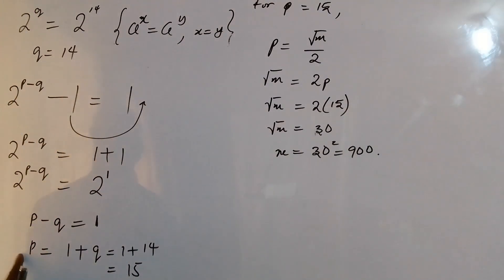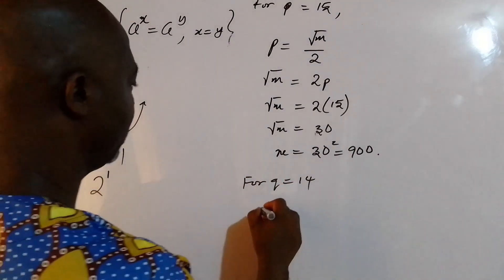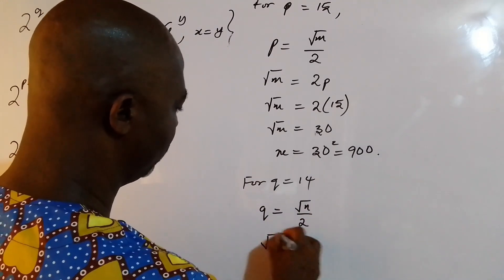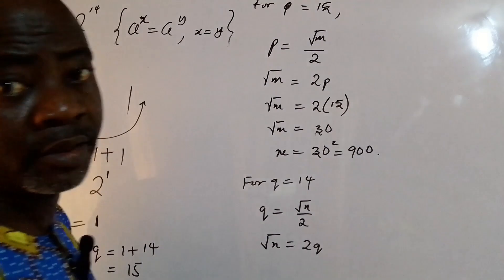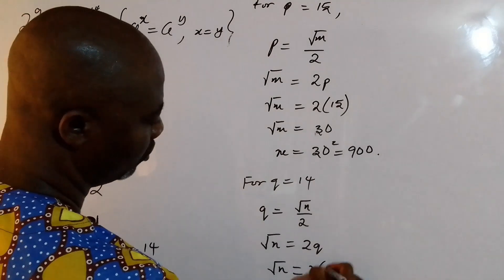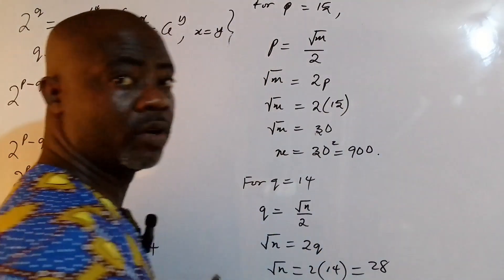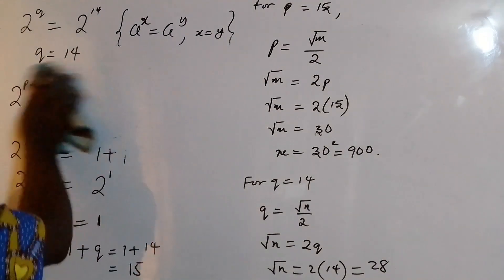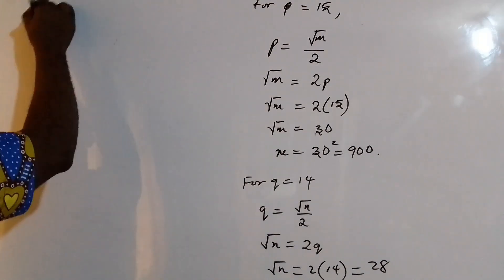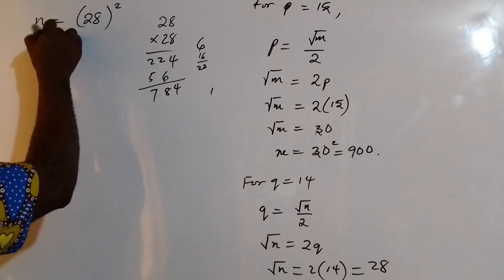For q equals 14, since q equals root n over 2, we have root n equals 2q, so root n equals 2 times 14, which is 28. Squaring both sides, n equals 28 squared, which is 784.